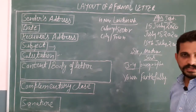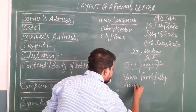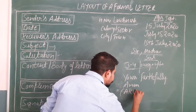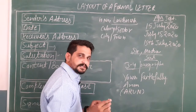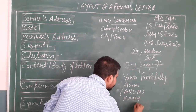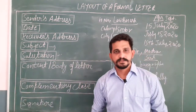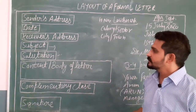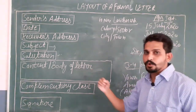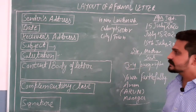Then comes the signature towards the end. Suppose the writer is Arun — this is the signature and the complete signature should be there. Then within brackets, the name in capital letters, then the designation, just like we did in notice writing. Suppose he is a manager, then he has to write 'Manager'. So these are the points to keep in mind while writing a letter. If you follow this format, the letter writing will look quite easy and beautiful, and easily we can write any formal letter.